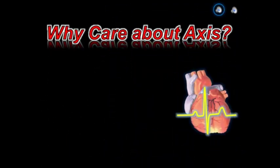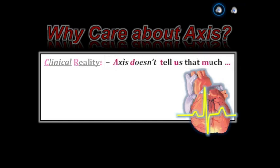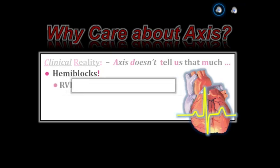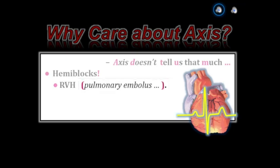The first question is: why care about axis at all? The clinical reality is that we just don't learn that much from determining the axis. We do need to calculate axis when assessing for hemiblocks, and axis is important in assessing for right ventricular hypertrophy, though not so for LVH, since many patients with even marked left ventricular hypertrophy do not have a leftward axis. The ECG is never definitive for diagnosing acute pulmonary embolism.